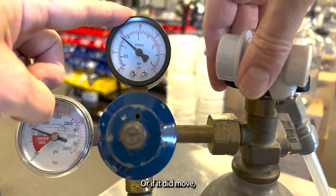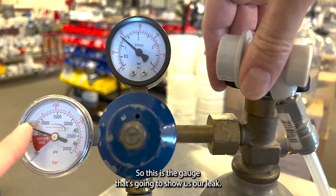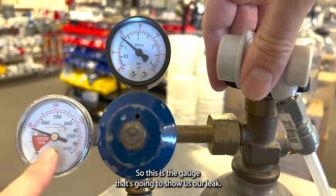The tank pressure gauge showed the leak. The working pressure gauge didn't move, or if it did move it recovered. So this is the gauge that's going to show us our leak.